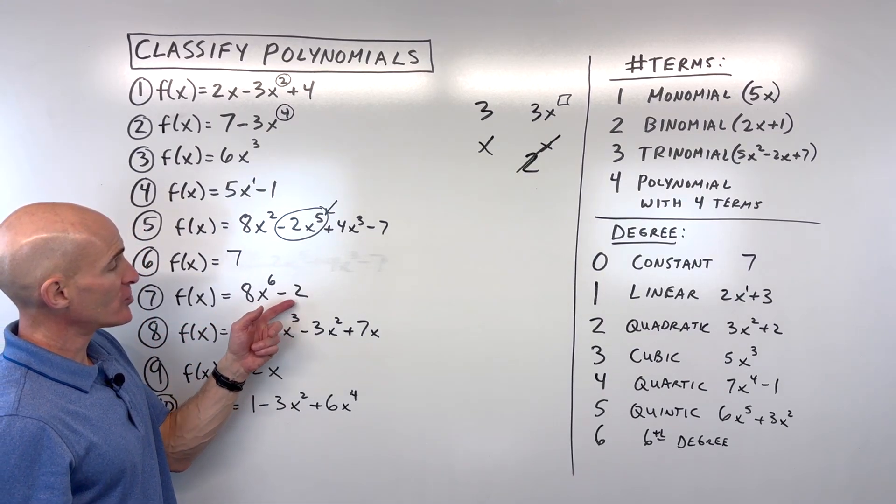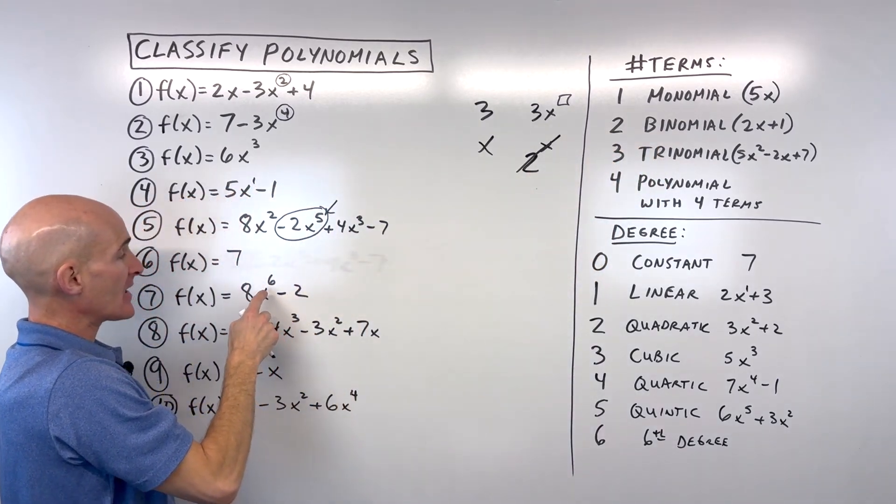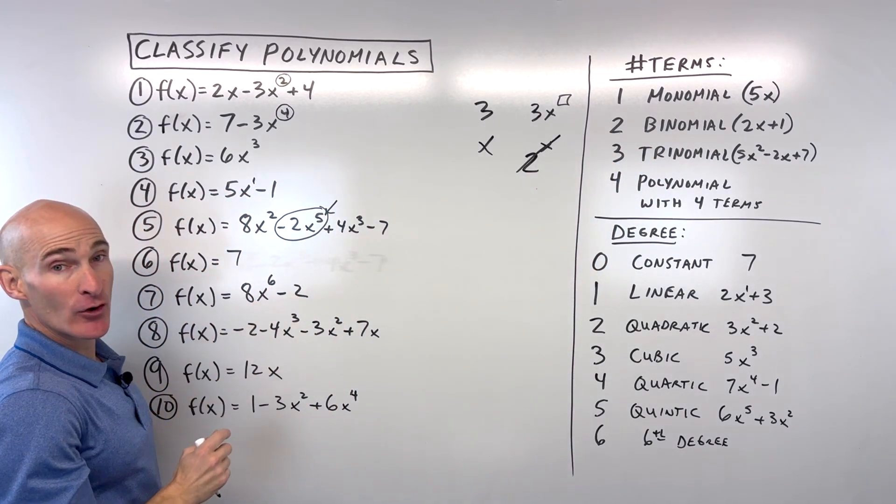Number seven, we have two terms. So that's a binomial like bicycle, right? Two wheels. And the highest power is 6. So we would say this is a 6th degree binomial.